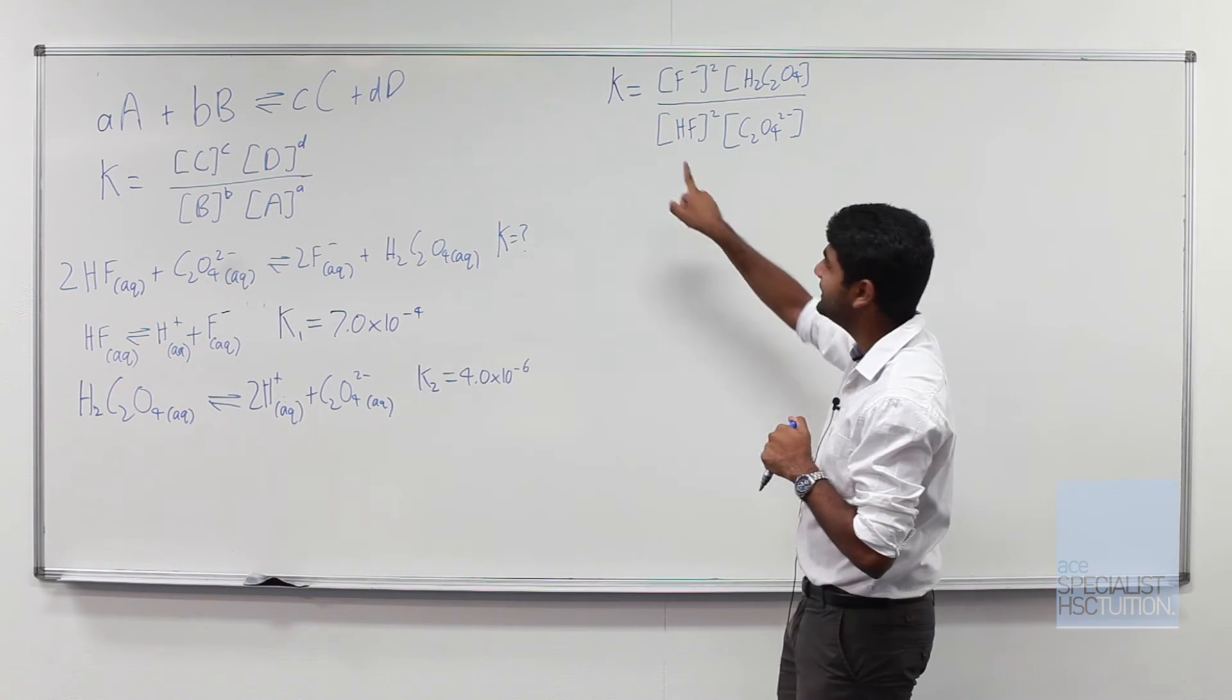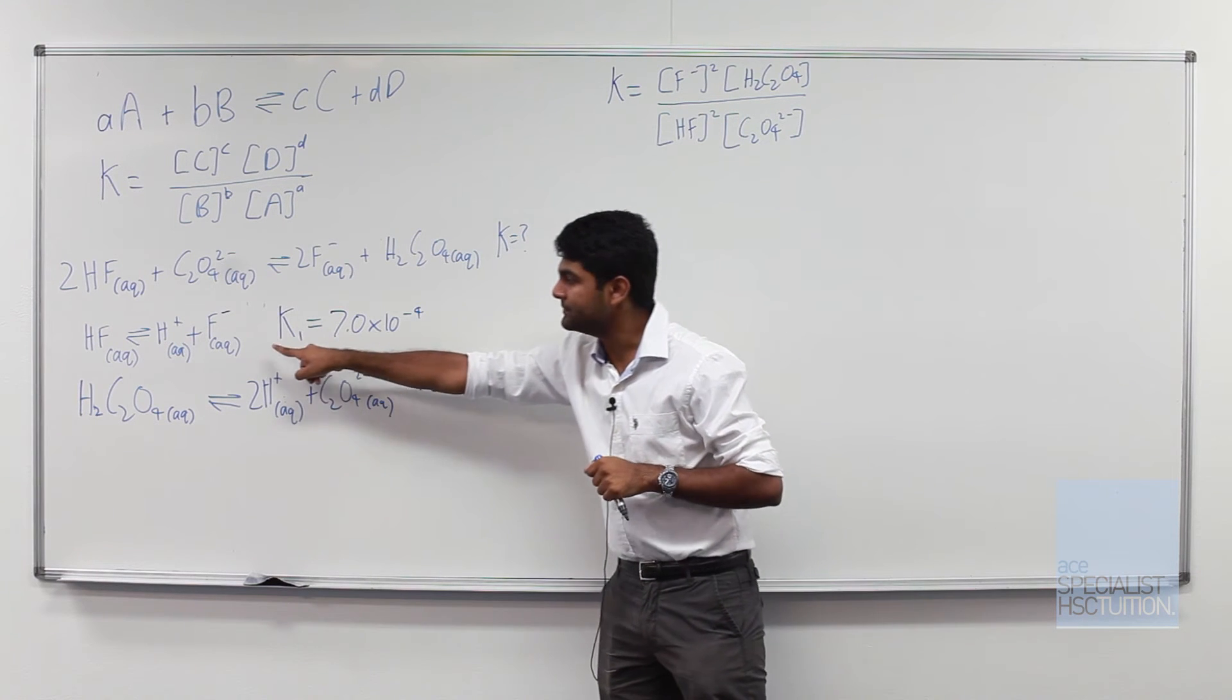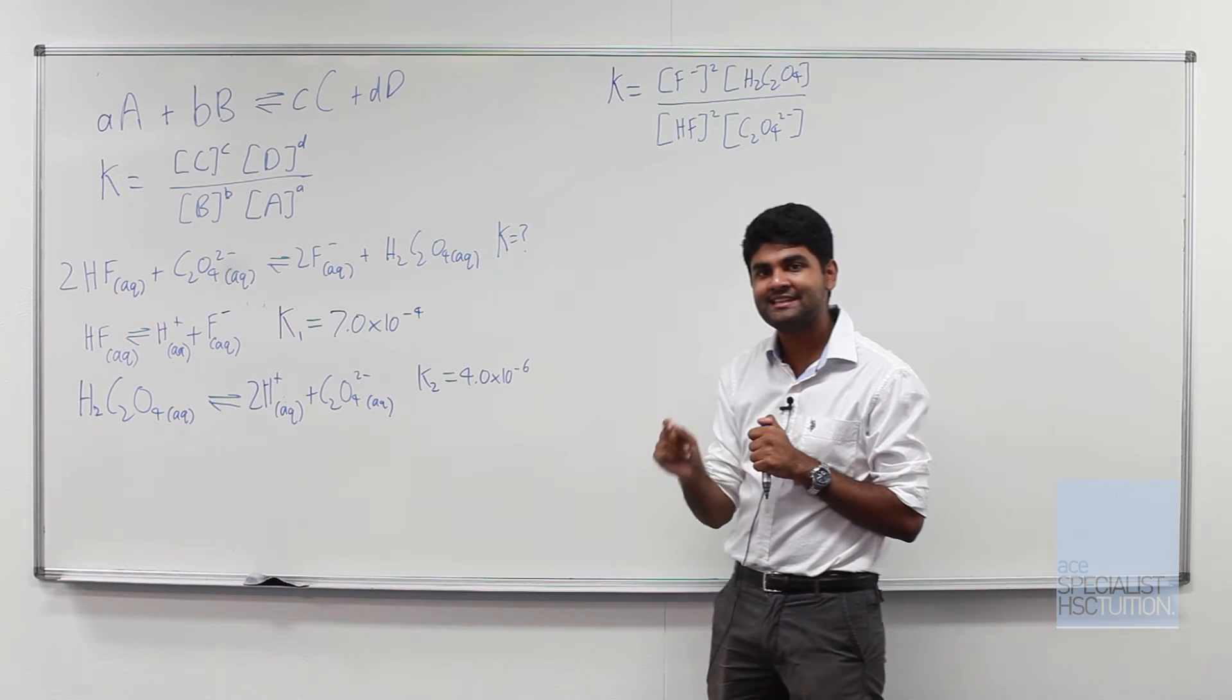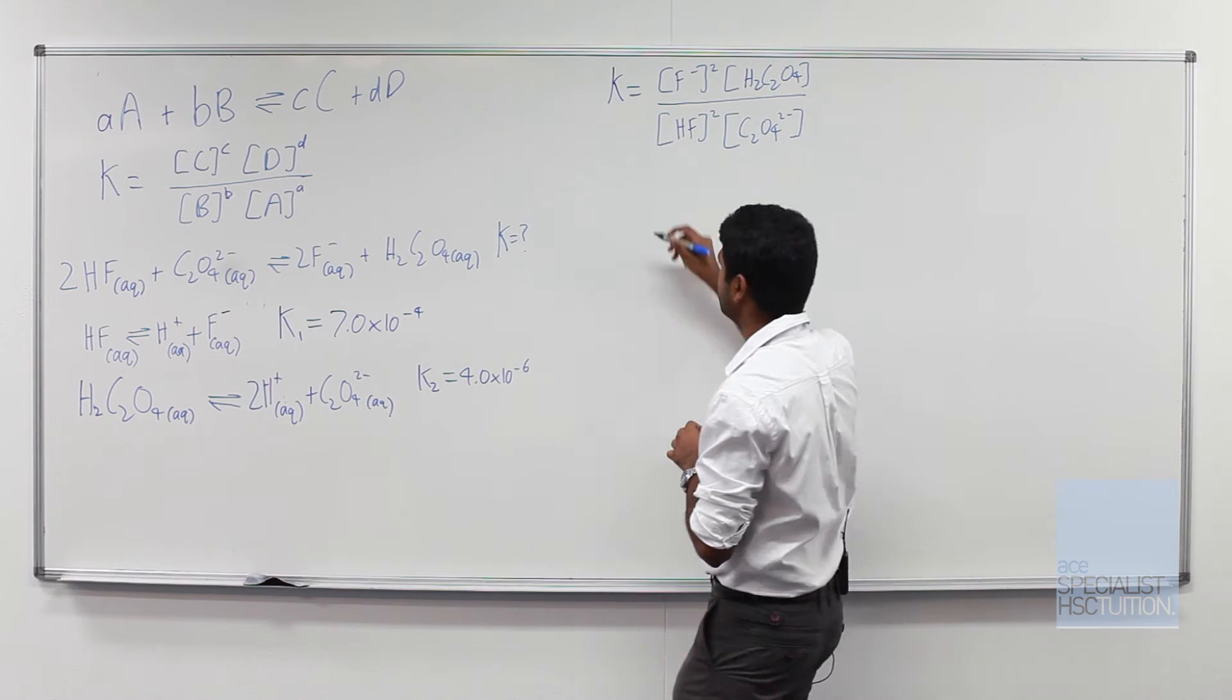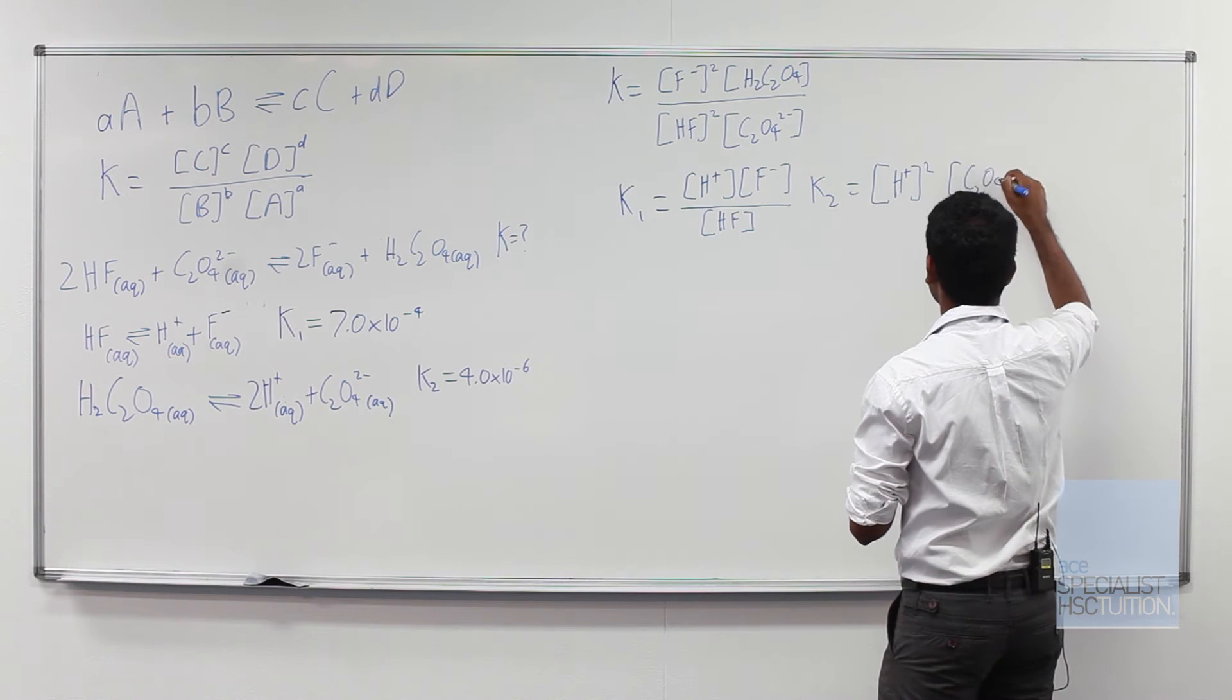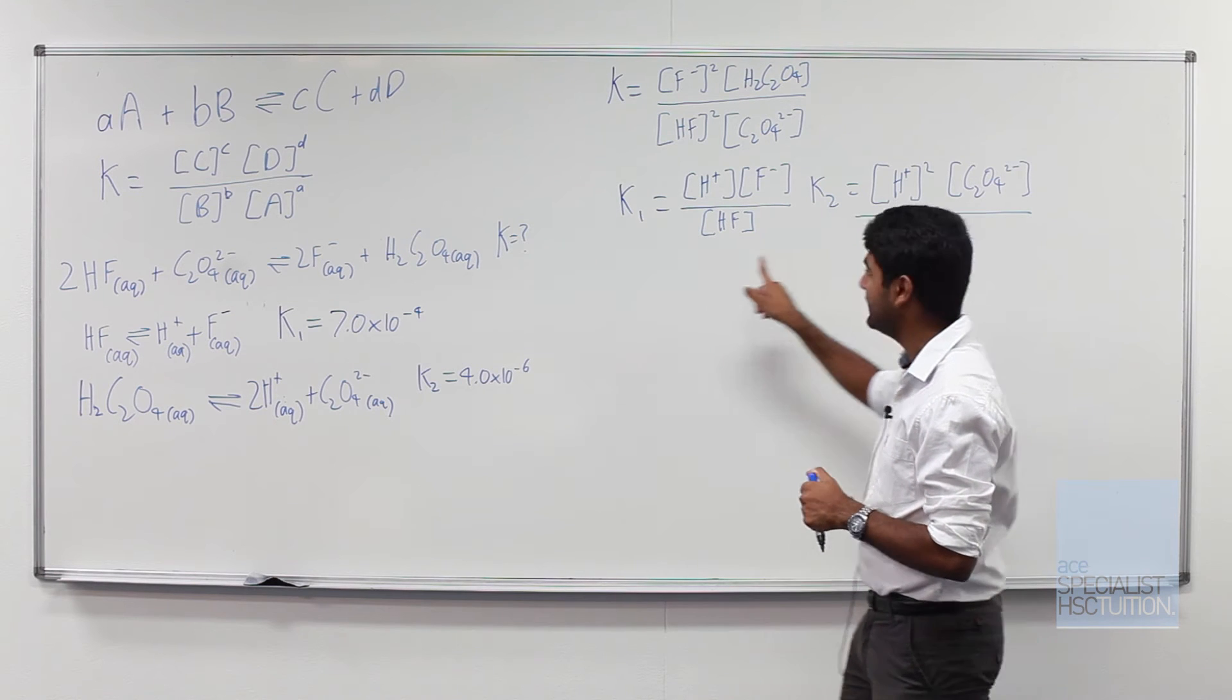So what we now need to do is we need to look at this equation and think how can I use the terms from this equation and this equation into this equation. So our next step is to write the same equilibrium expression for K1 and for K2.